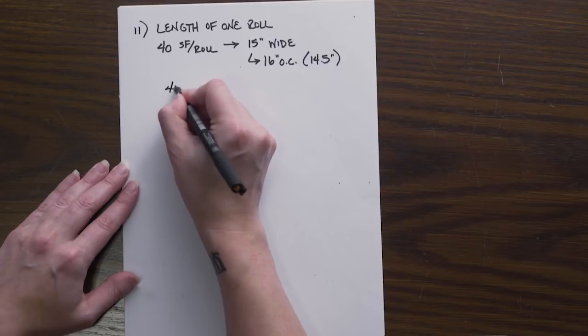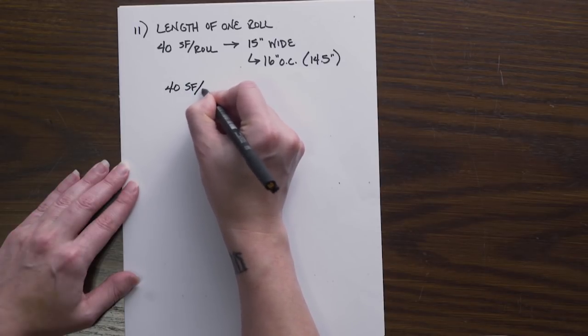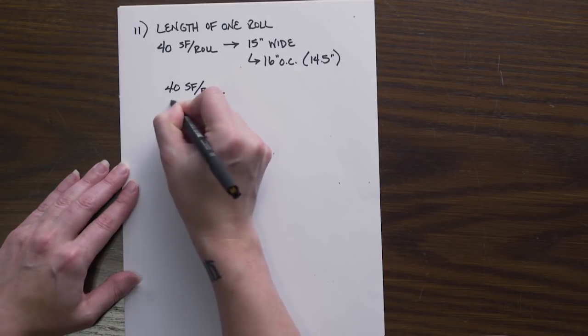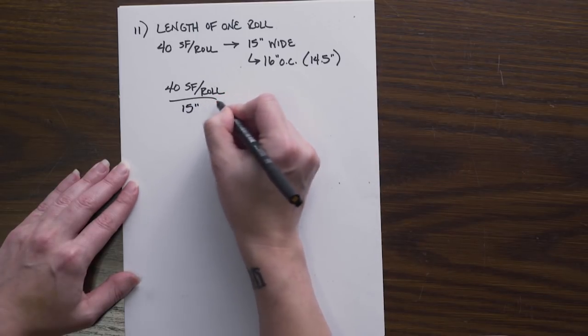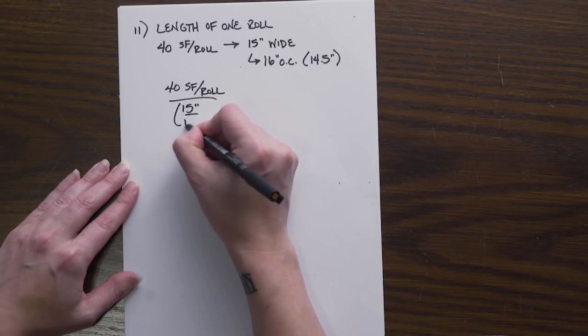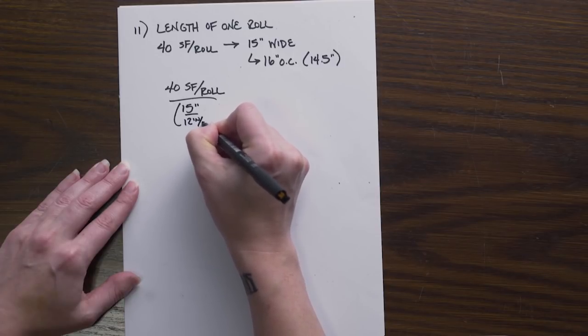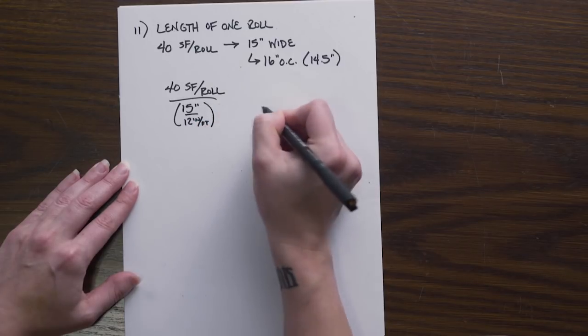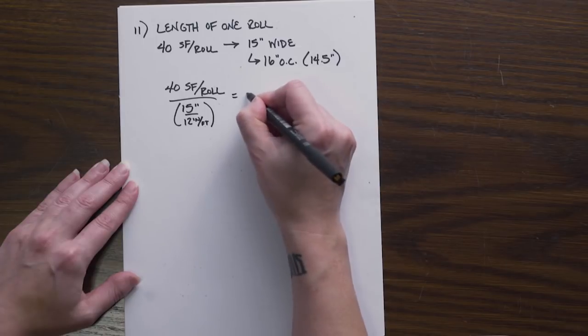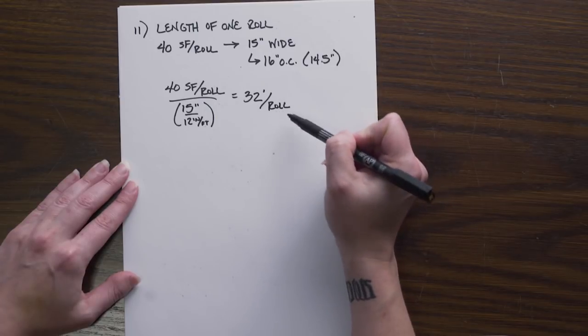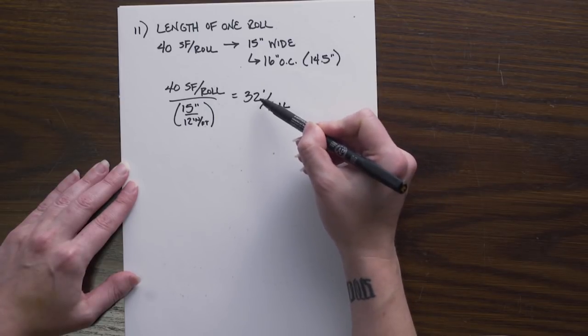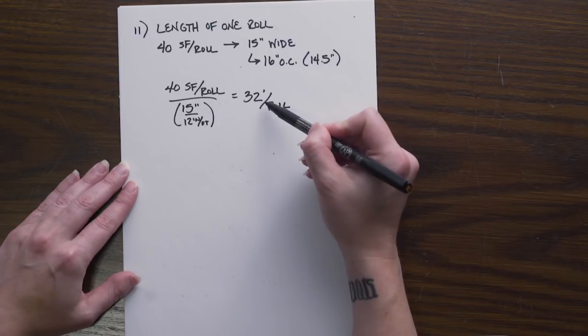If we have our 40 square foot per roll, we can divide by our 15 inch width, and we want to make sure that we convert this into feet so we're using proper numbers, and we come out with exactly 32 feet per roll. So each roll of insulation will cover 32 lineal feet of wall.